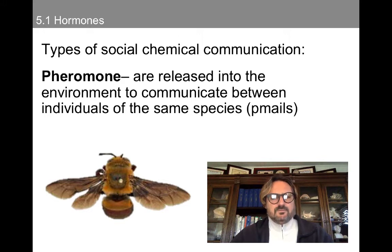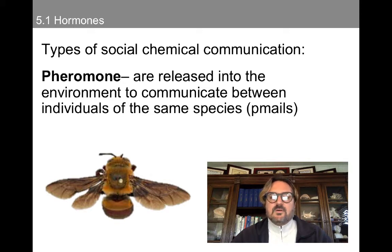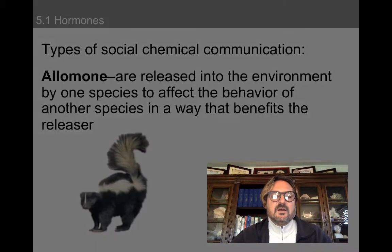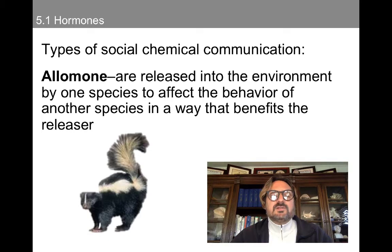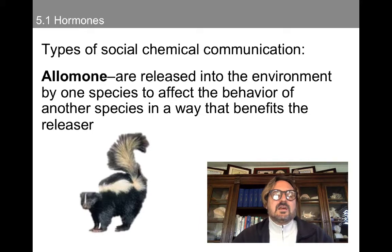We also have social chemical communication. For instance, we have pheromones, which are released into the environment to communicate between individuals of the same species — maybe when dogs are sniffing telephone poles, it's a form of communication, they're picking up scents. We also have allomones, which are released into the environment by one species to affect the behavior of another species. A great example would be a skunk — allomones benefit the releaser, so the skunk releases its scent, which then deters predators from entering the region.